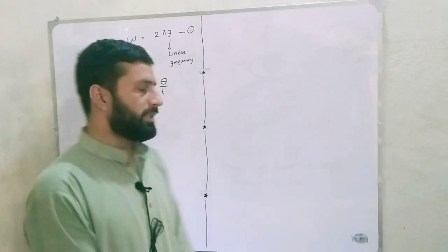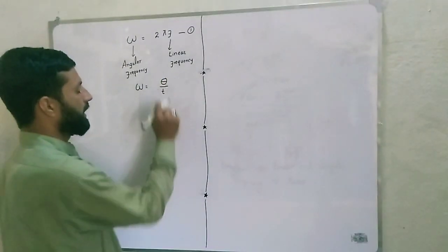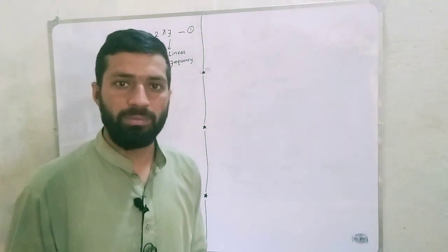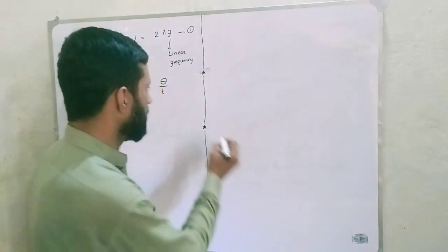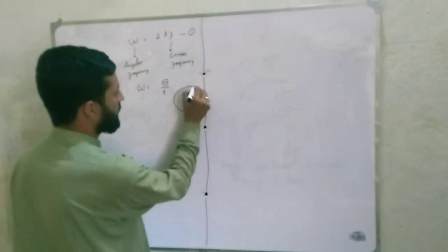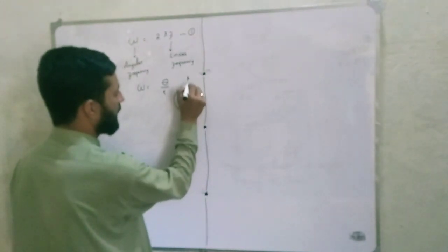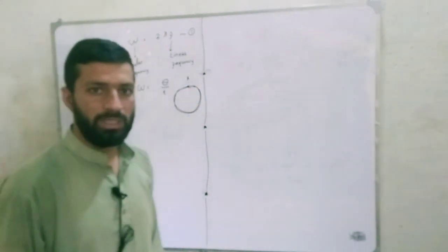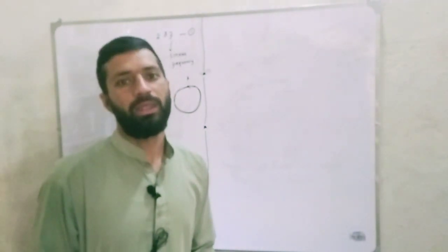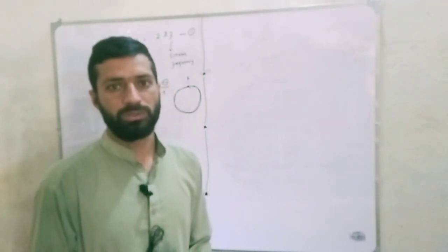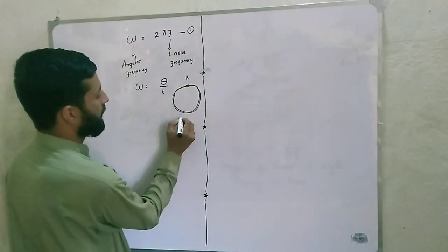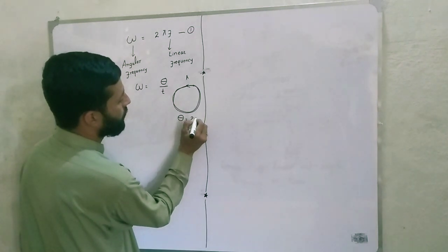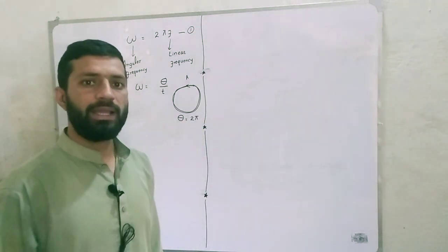Omega equals theta divided by t — this is angular frequency, also called angular velocity. Theta here is angular displacement, or we can say it is a revolution. When a body completes a revolution in a circle, starting from point A and returning to point A, that is one revolution in angular motion.